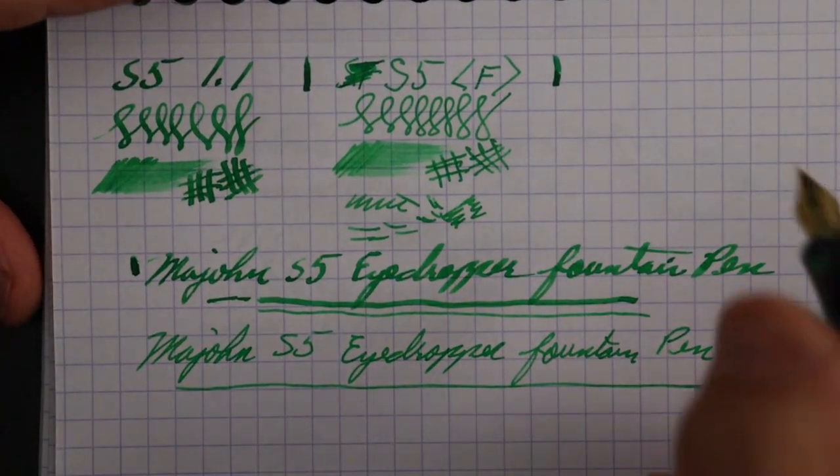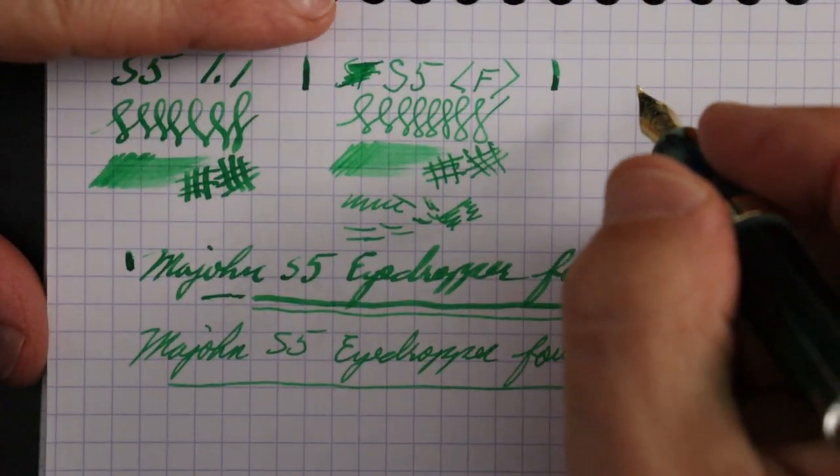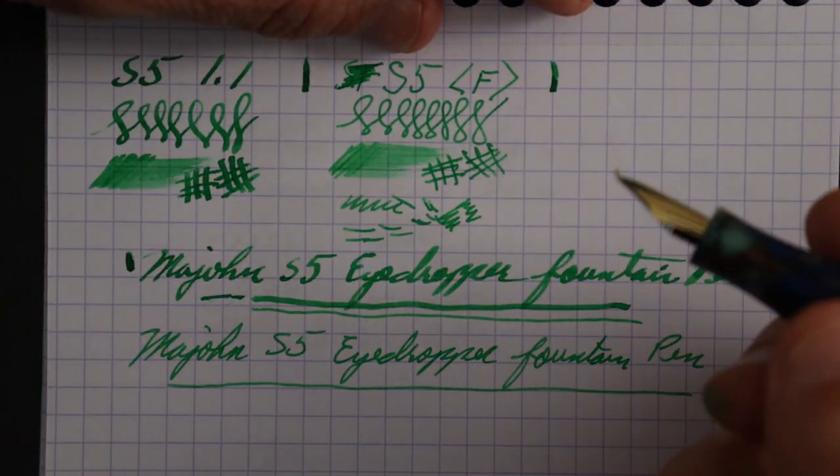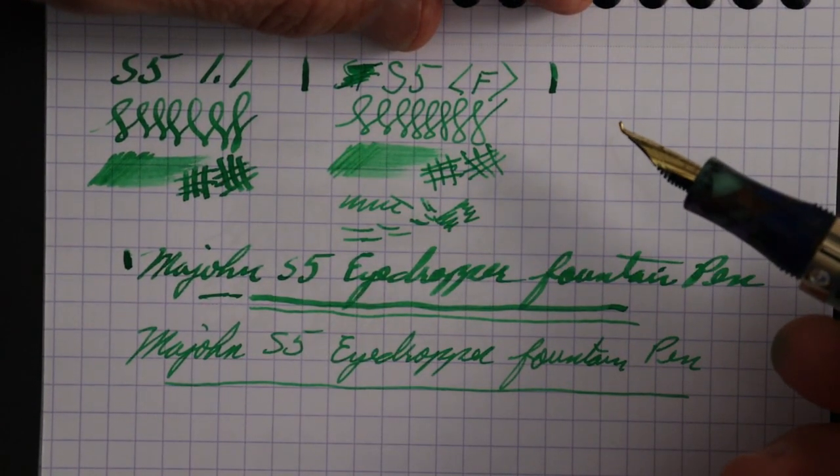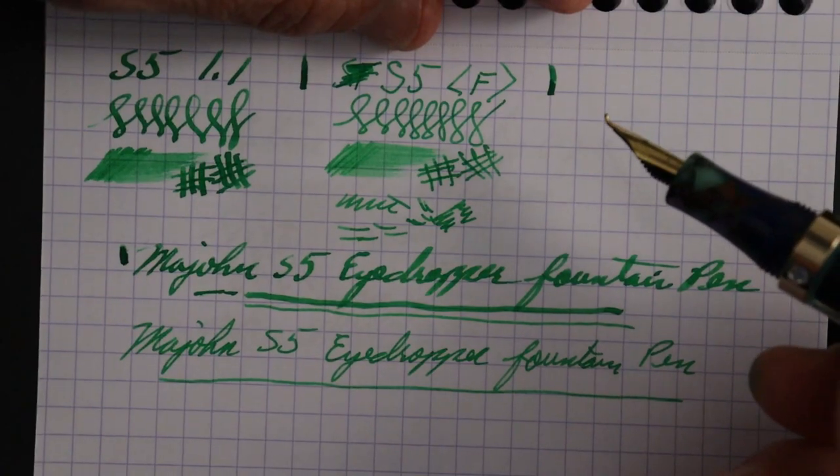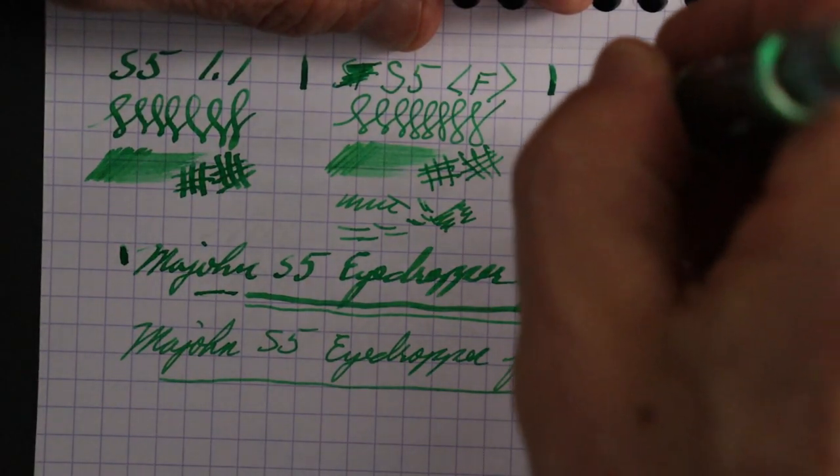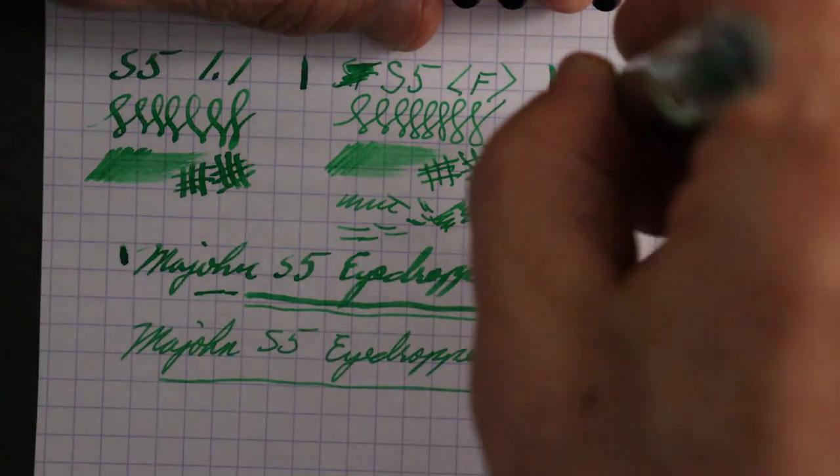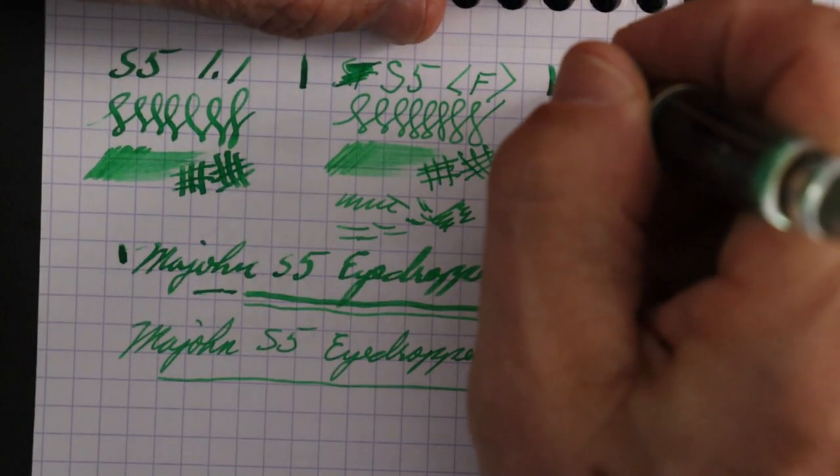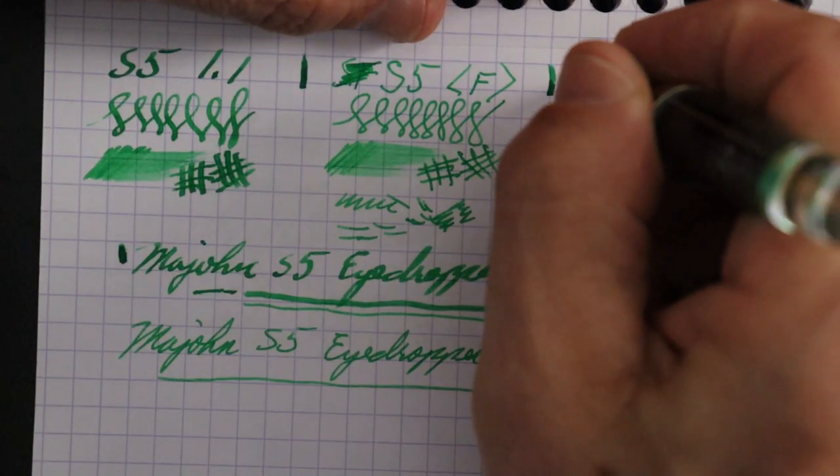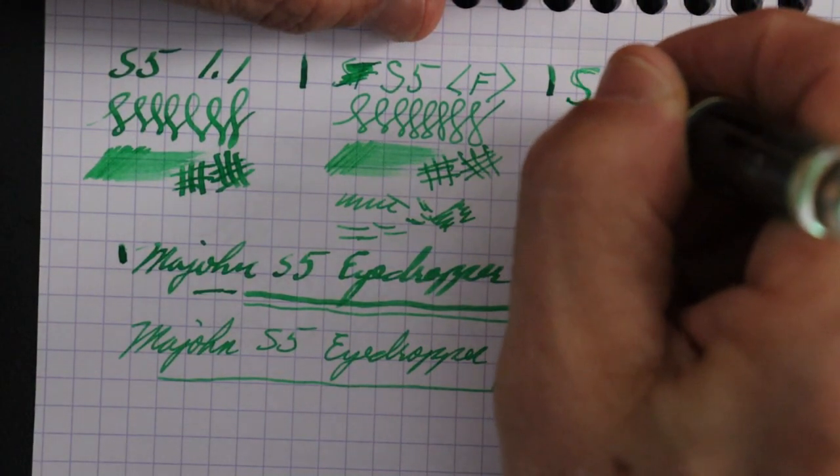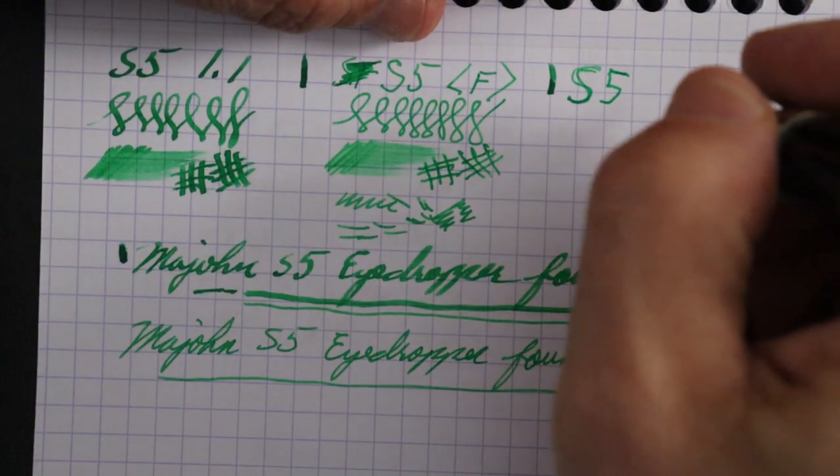Trying to keep all this together here. All right, so this is the, now this is a, this is that fude nib, F-U-D-E or fude, whatever. So apparently the line width varies as you tilt it. So I'm going to go, my S's and five want to look similar.